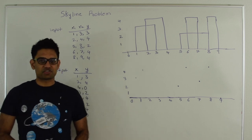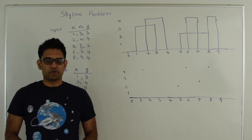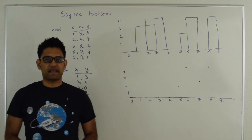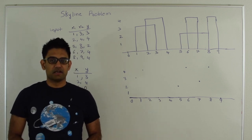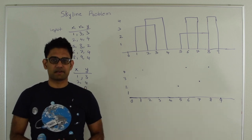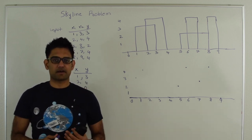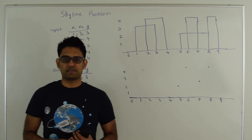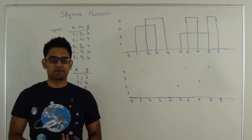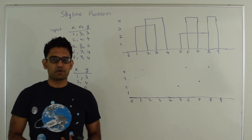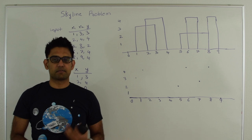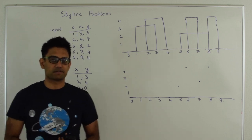Hello friends, my name is Tushar and today I'm going to talk about the skyline problem. This is a very popular interview question and LeetCode also has this question. You're given start, end, and height of some buildings — from a distance it looks like the buildings are overlapping with each other. The question is to output the skyline of these buildings collectively, or in other words how you would merge the overlapping buildings. This question can also be seen as merging of two-dimensional intervals.